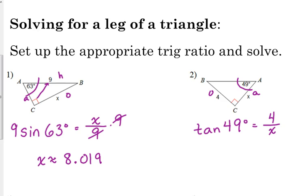So solving this one is two steps instead of one step. But the nice thing is the same thing happens every single time. I'm trying to get x by itself. It's in the denominator. So we're going to start by multiplying by x. And then we're going to turn around and we're going to divide by the tangent of 49 degrees.